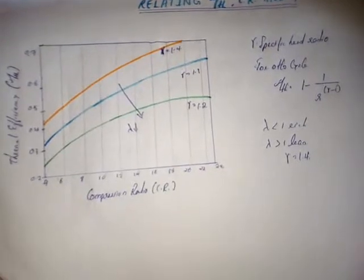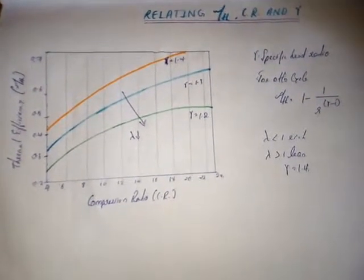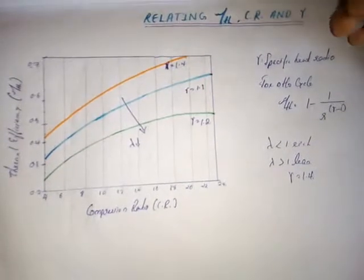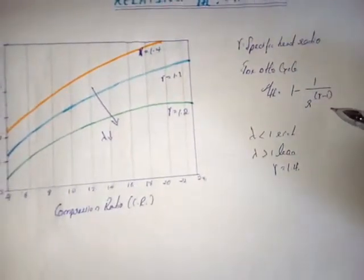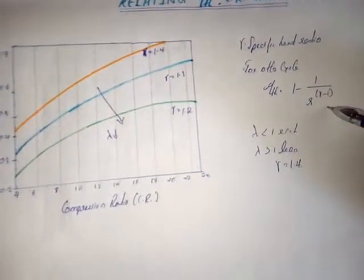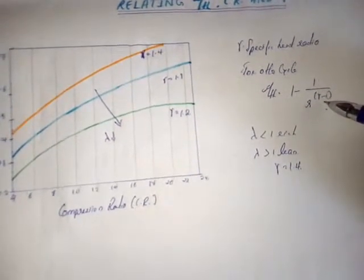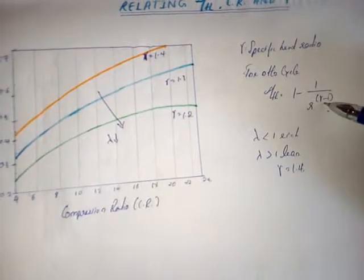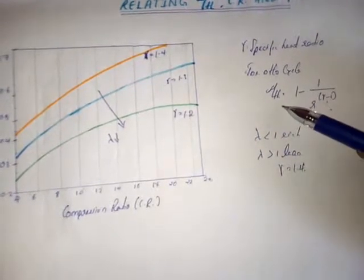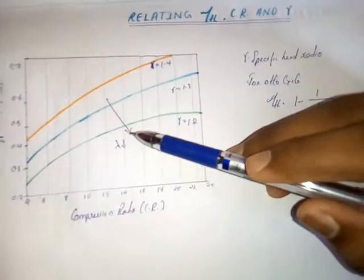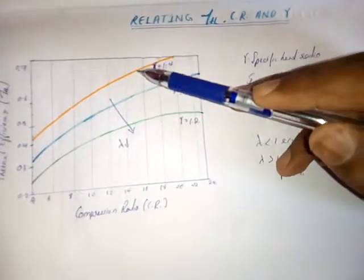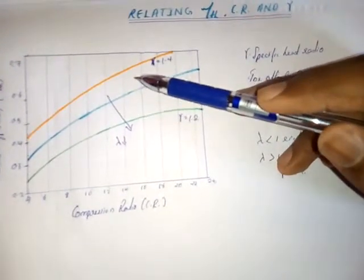We know the thermal efficiency equation of a gasoline engine which operates in an Otto cycle. From this equation we can say that by increasing the gamma value we can increase the thermal efficiency. The same thing is shown in this diagram.